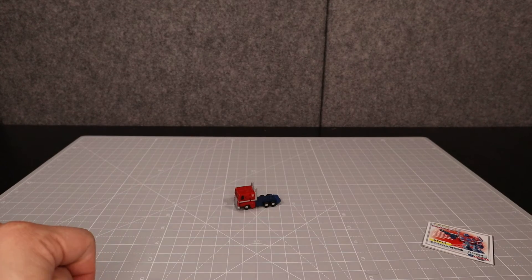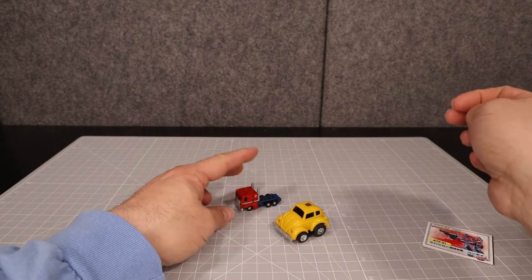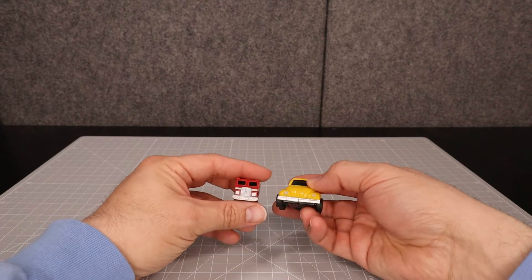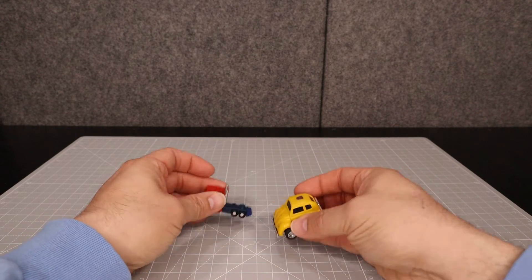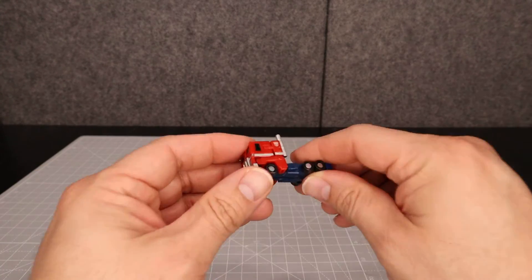...here he is with reissue Bumblebee, and you can see how big that is there. Yeah, that's pretty much how big that is. Pretty interesting stuff. Let's take a quick closer look at it.